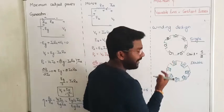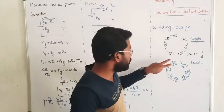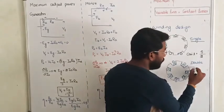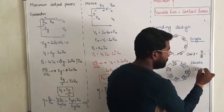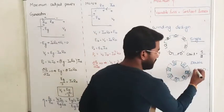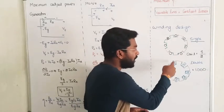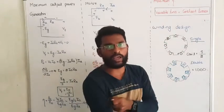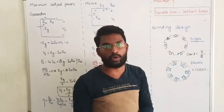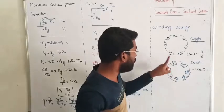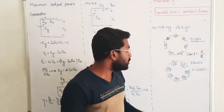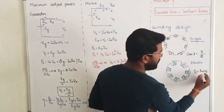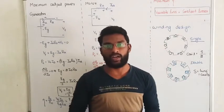In double layer winding, one slot has two conductors — that is one turn per slot. So if I have 1000 slots, each slot gives one turn directly, meaning 1000 turns. In double layer winding, the number of slots and the number of turns are equal. That is the key difference between single layer winding and double layer winding: in single layer, number of turns equals slots divided by 2; in double layer, number of turns equals number of slots.